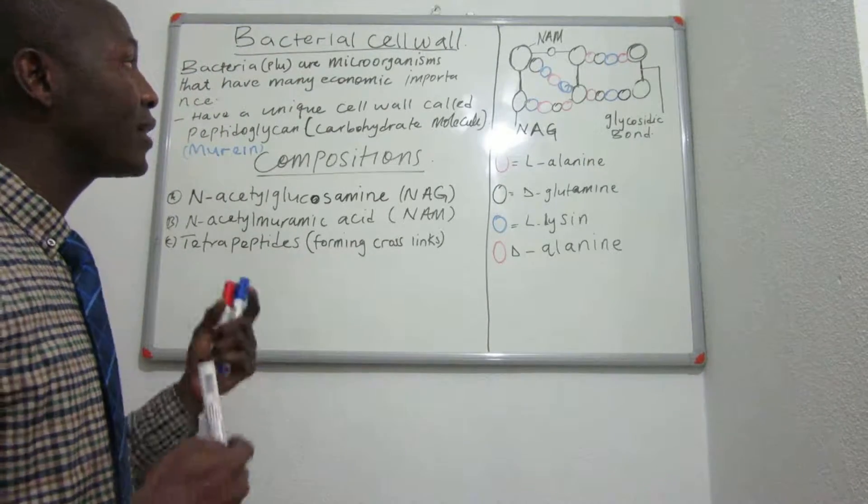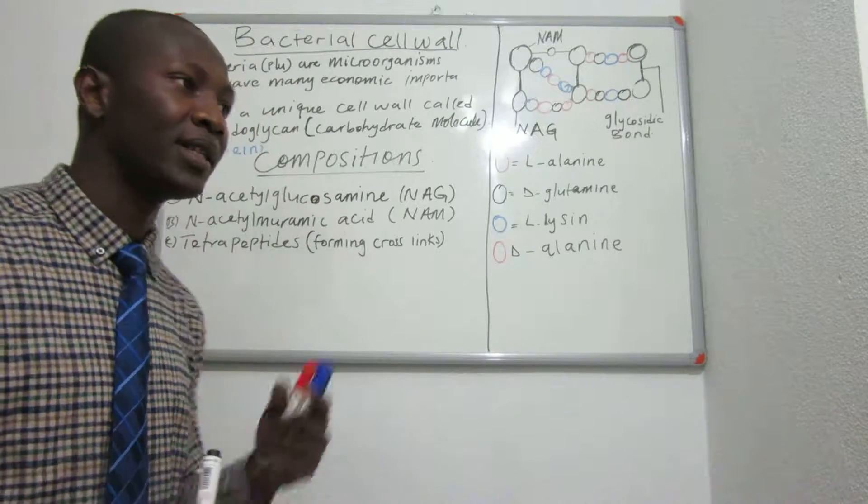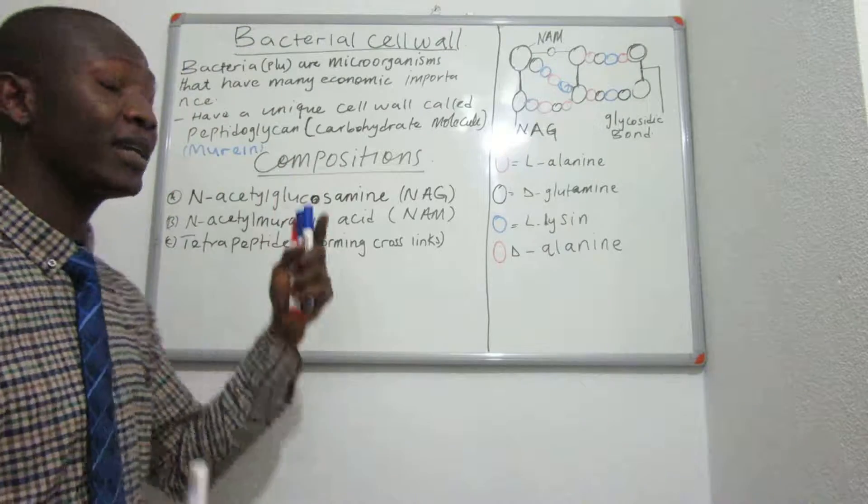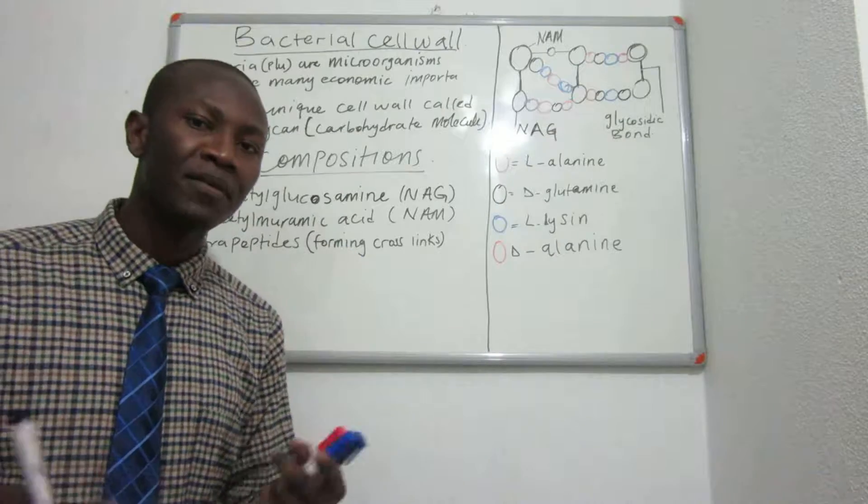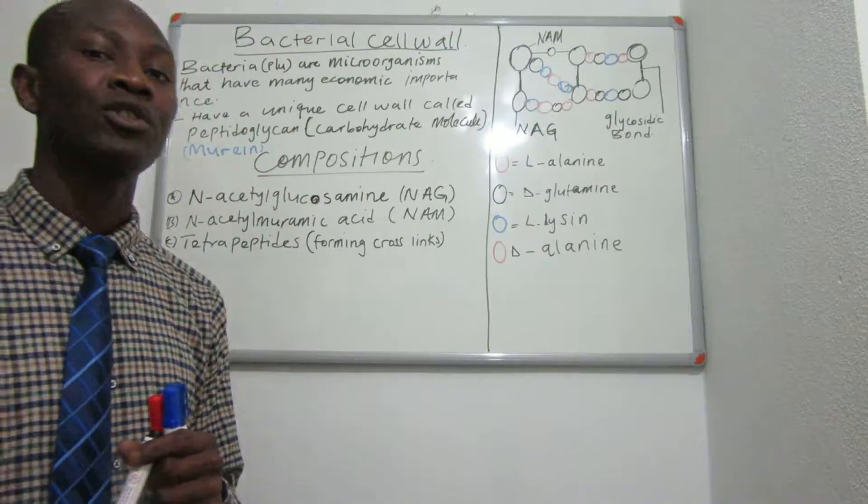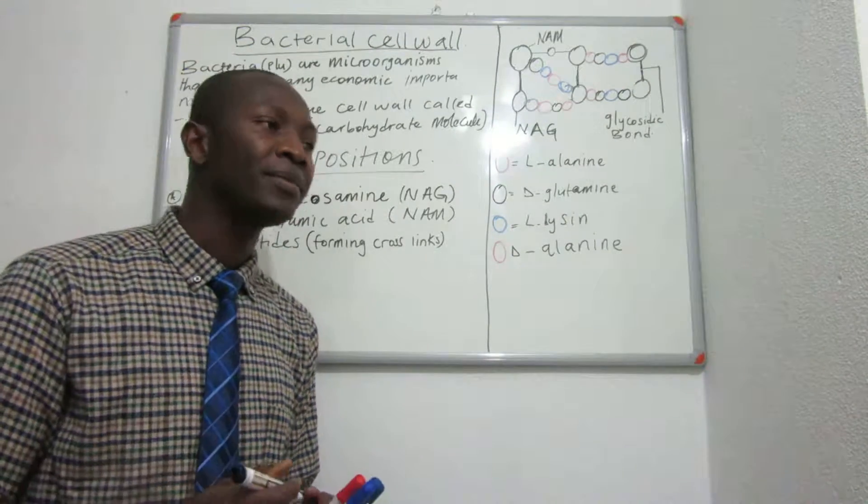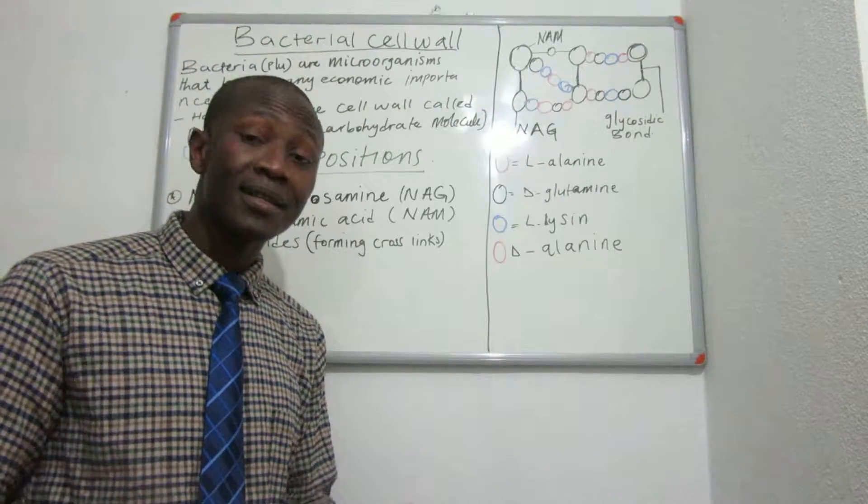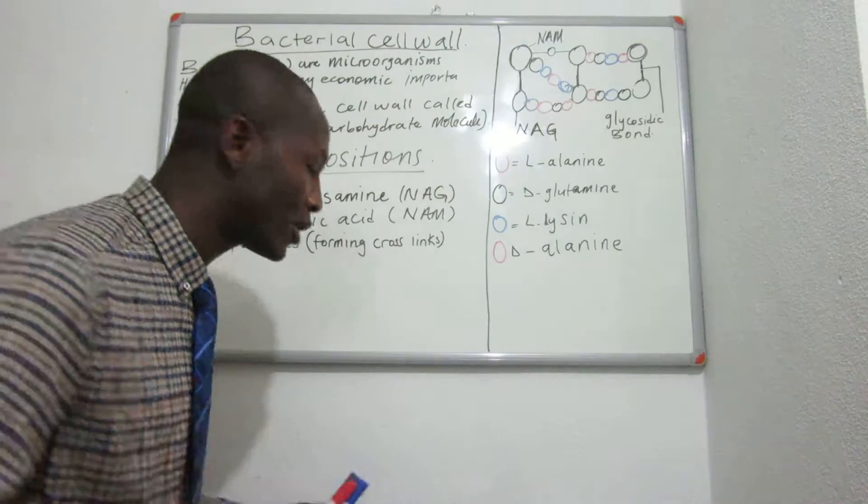These bacteria have a unique cell wall structure that we call the peptidoglycan, also called the muramic acid. This cell wall structure means most bacteria, because not every bacteria have cell wall structure. Examples are the mycoplasm and the L-form bacteria. These are classes of bacteria or genus of bacteria that do not contain cell wall structure.